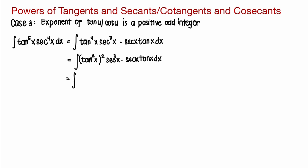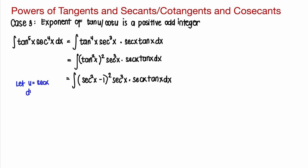We can now express tangent squared x using the Pythagorean identity: tangent squared x equals secant squared x minus 1. So the integrand becomes secant squared x minus 1, quantity squared, times secant cubed x, times secant x tangent x dx. We let u equal secant x, so du equals secant x tangent x dx. Substituting, the integral becomes the quantity u squared minus 1, raised to the power of 2, times u cubed du.